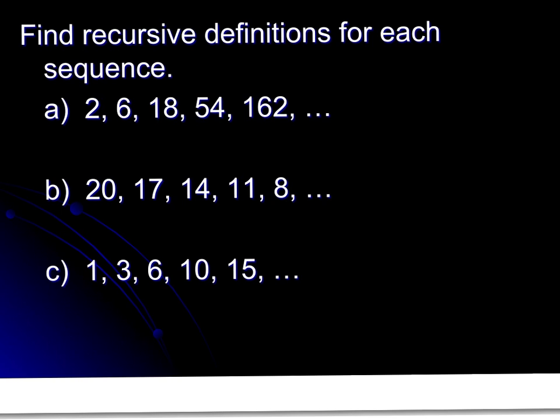We can also do these backwards. So we're given the sequence, and we have to come up with a recursive definition. The first thing you want to do is look for a pattern. In this case, we can see these are all being multiplied by 3 from term to term. And that pattern continues indefinitely. To write the definition, we've seen that these things have two parts. The first one, you need to define a term. In most cases, it's the first term. So t sub 1 equals 2, and all you're doing is copying that first term for that.